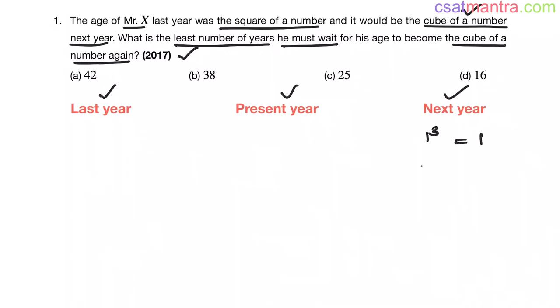1 cube is 1, 2 cube is 8, 3 cube is 27, 4 cube is 64, 5 cube is 125.